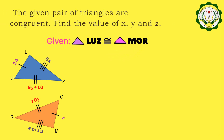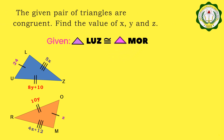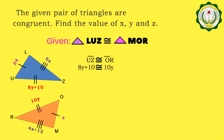Let us move on to the next activity. In this activity, we are given that the pair of triangles LUZ and MOR are congruent. What we will do is solve for the values of X, Y, and Z. So, let us solve first for the value of Y. We have segment UZ congruent to segment OR. Segment UZ is equal to 8Y plus 10, while segment OR is equal to 10Y. By substitution, we have 8Y plus 10 is equal to 10Y.